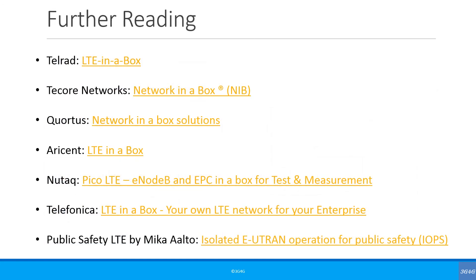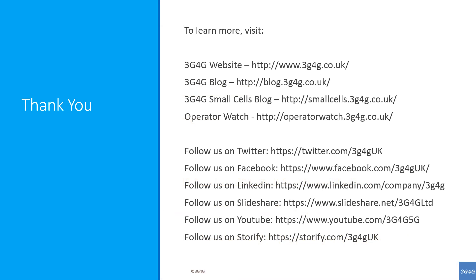Here are some links for other vendors' Network in a Box solutions. It also contains links to the Telefonica presentation and the Public Safety LTE Blog, so you can read more from these links to understand how different vendors are pitching their Network in a Box. I hope you liked this short presentation explaining Network in a Box and Isolated E-UTRAN Operation for Public Safety — IOPS. Please feel free to provide comments or suggestions below, and if you like the video, please subscribe to our channel and give it a thumbs up. Thank you.